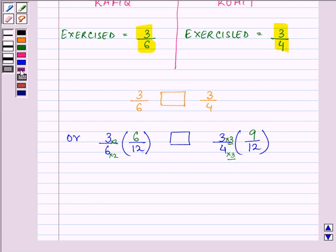Now we need to decide which one of them is greater. It's 9 by 12. We can say that as our answer that 3 by 4 is greater than 3 by 6. That means Rohit exercised for a longer time.